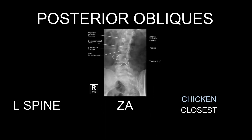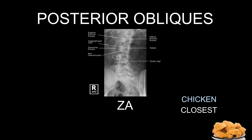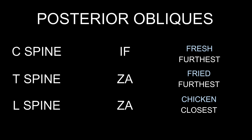For the lumbar spine, remember you lay the patient on 'za' table, so we're looking at the zygapophyseal joints. In an RPO L-spine image, we're looking at the zygapophyseal joints closest — or 'chicken' — to the IR, which will be the right posterior side. So an RPO L-spine shows the zygapophyseal joints on the right side. In 'za,' those are in alphabetical order going down. The book may say 'upside' instead of 'furthest' for C-spine, and for L-spine it'll say 'downside,' which is the one touching the IR.